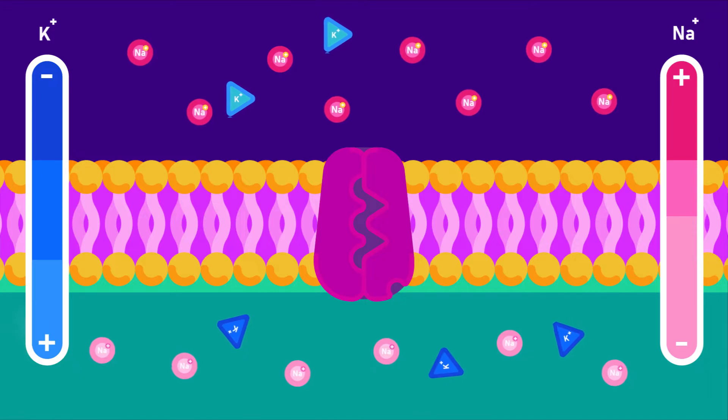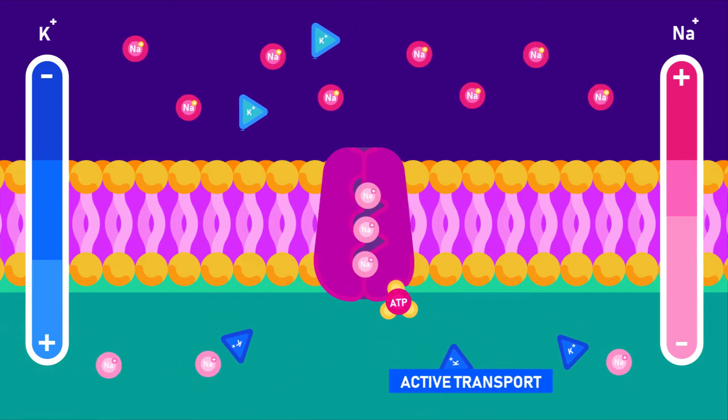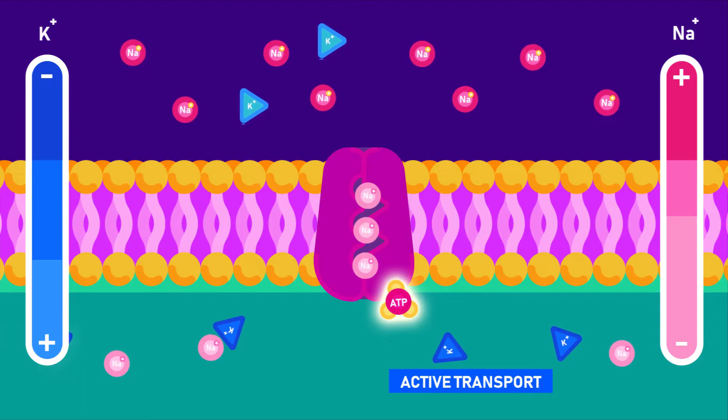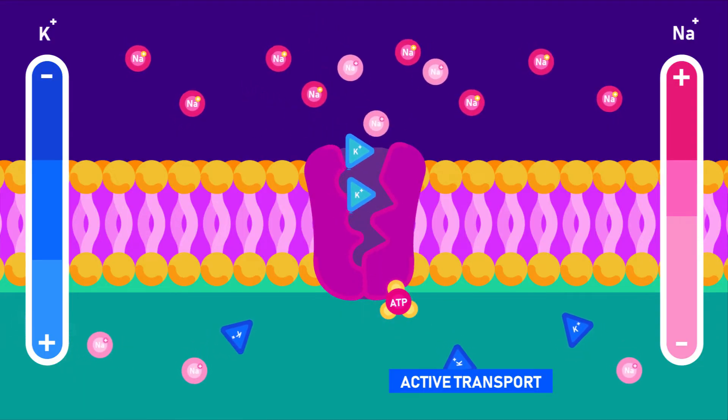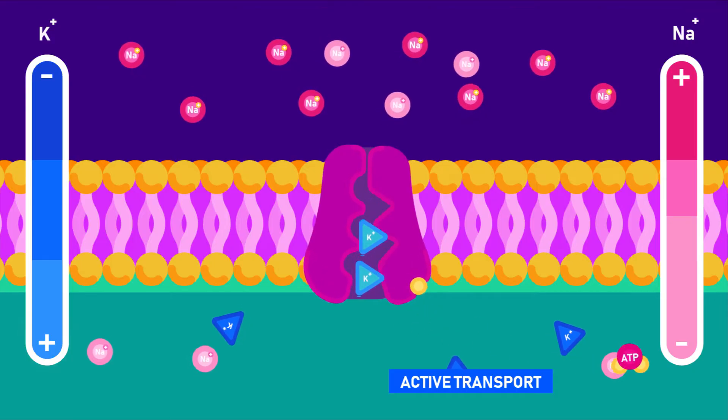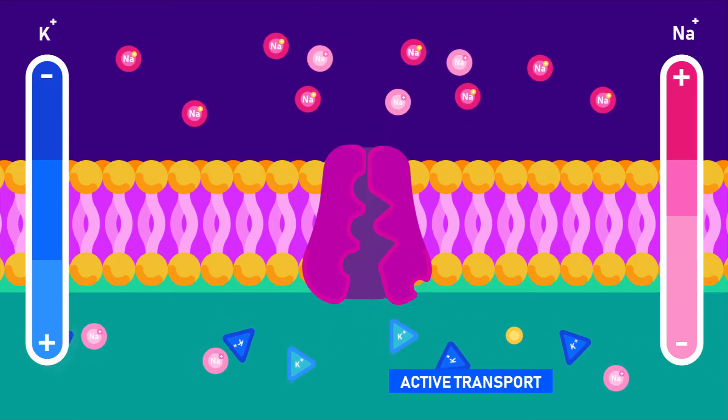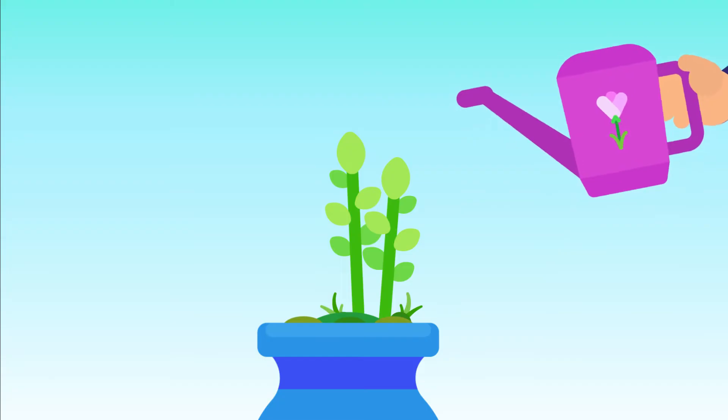This process is called active transport, and it is possible by spending energy in the form of ATP. Whenever a molecule is passing across the membrane into a higher concentration region, some ATP, or adenosine triphosphate, is utilized in living